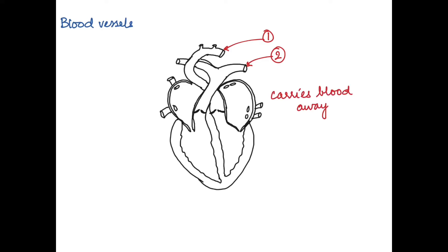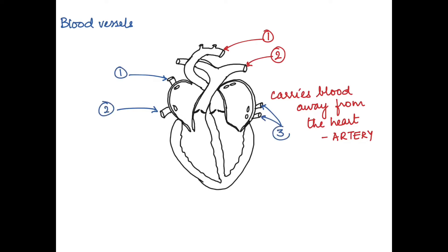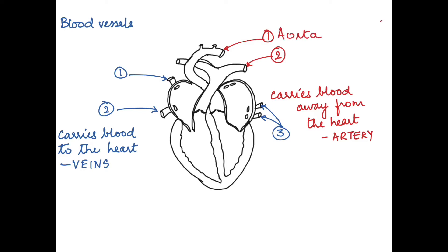Any vessel that carries blood away from the heart is called an artery. The blood vessels shown in blue are the ones that carry blood to the heart, and these are called veins.